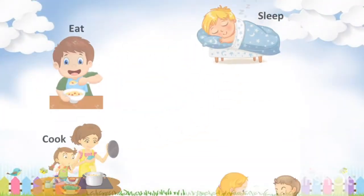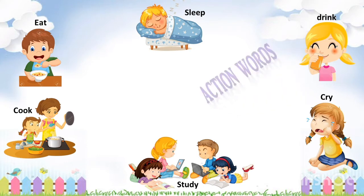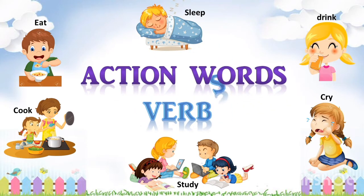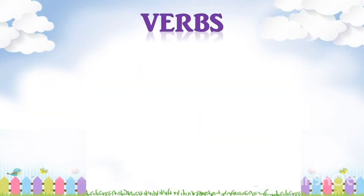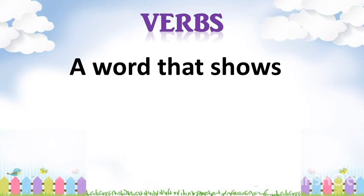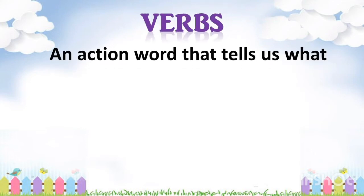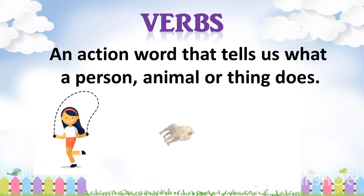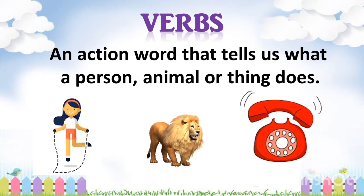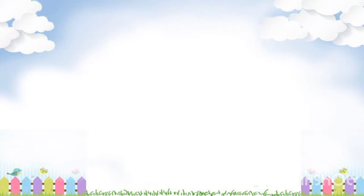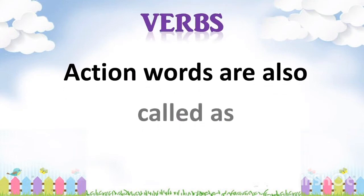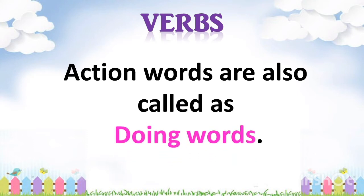Hello children, today we will learn about action words — verbs. A word that shows an action is called an action word or verb. An action word tells us what a person, animal or thing does. Action words are also called doing words. Let's see a few examples of an action word.